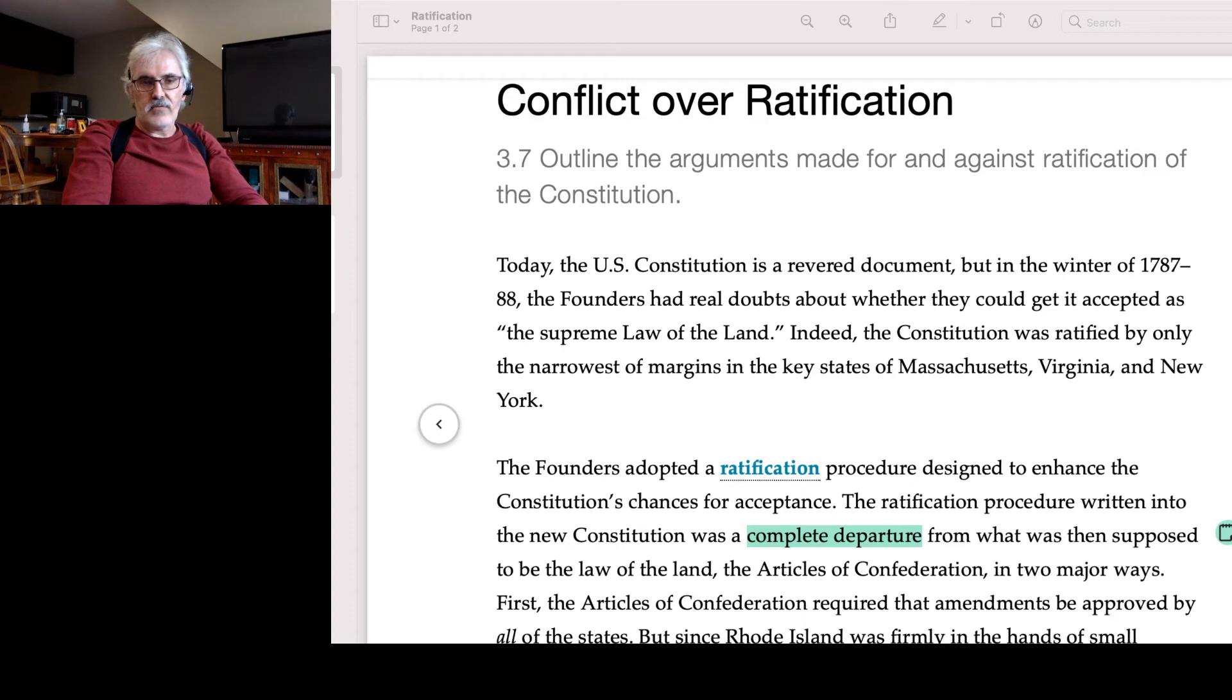So let's read it. If you can pull up your book, read along. If not, just follow along with the section as I have it on the screen. So today, the U.S. Constitution is a revered document. But in the winter of 1787-88, the Founders had real doubts about whether they could get it accepted as the supreme law of the land. Now, keep in mind, the supreme law of the land at that time were the Articles of Confederation, not the current Constitution.